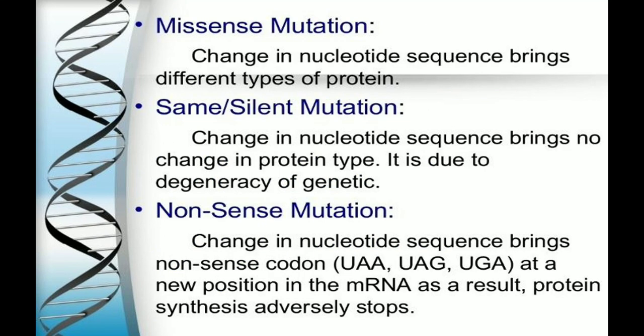Nonsense mutation means a change in nucleotide sequence brings nonsense codons: UAA, UAG, UGA. At a new position in the mRNA, the result is that protein synthesis is adversely stopped. If there is a new stop position in the mRNA, protein synthesis is halted.